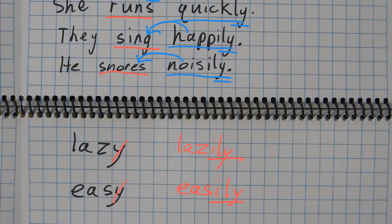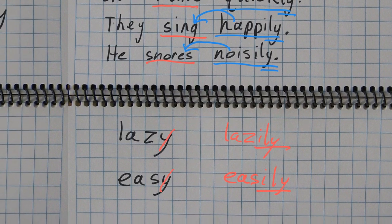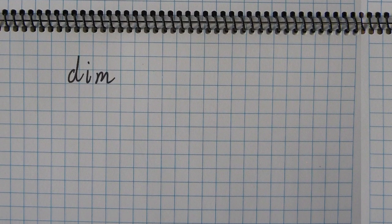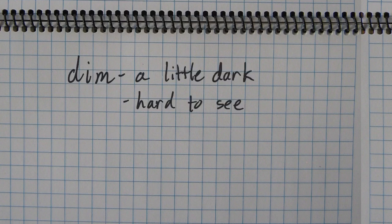Alright, so that's your grammar lesson. Let's just get into the meanings of only four words this week that you might not know. And we will just define the base word. So the word is dimly, but the base word is dim. And dim means a little dark or hard to see.